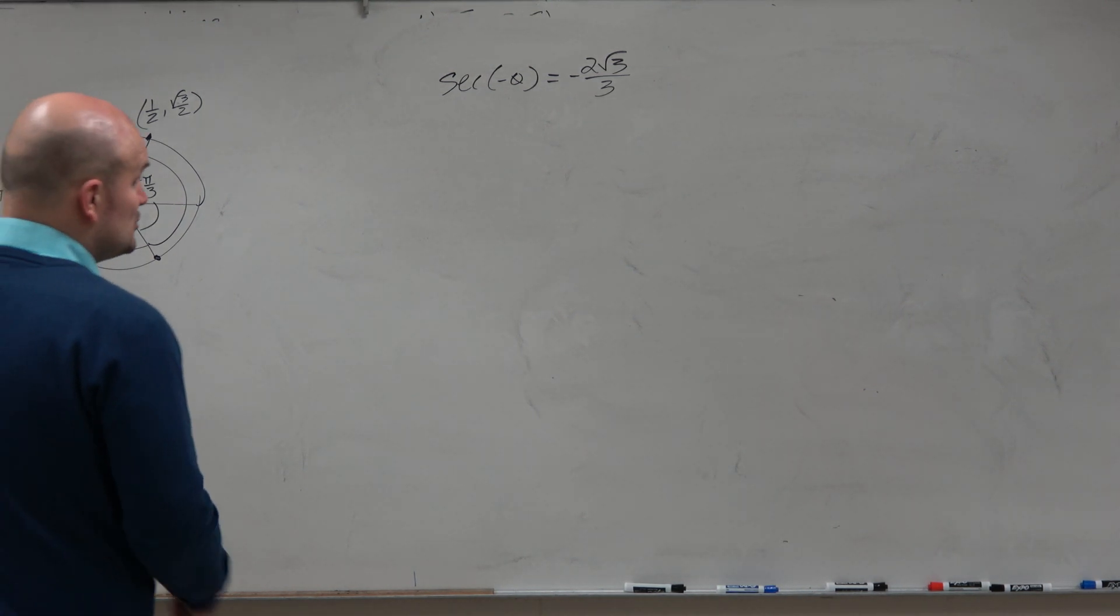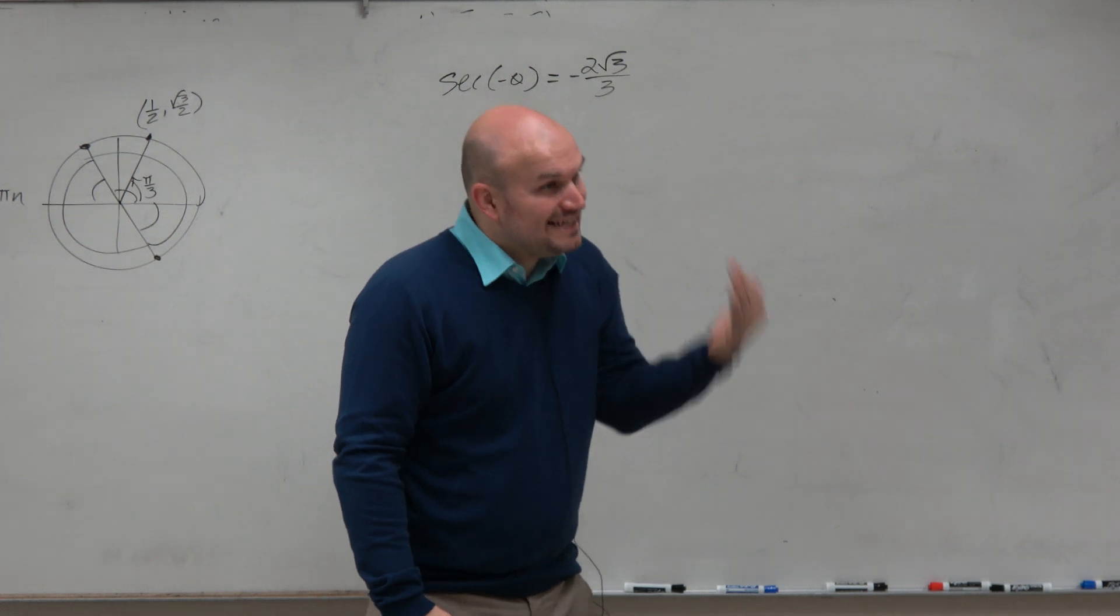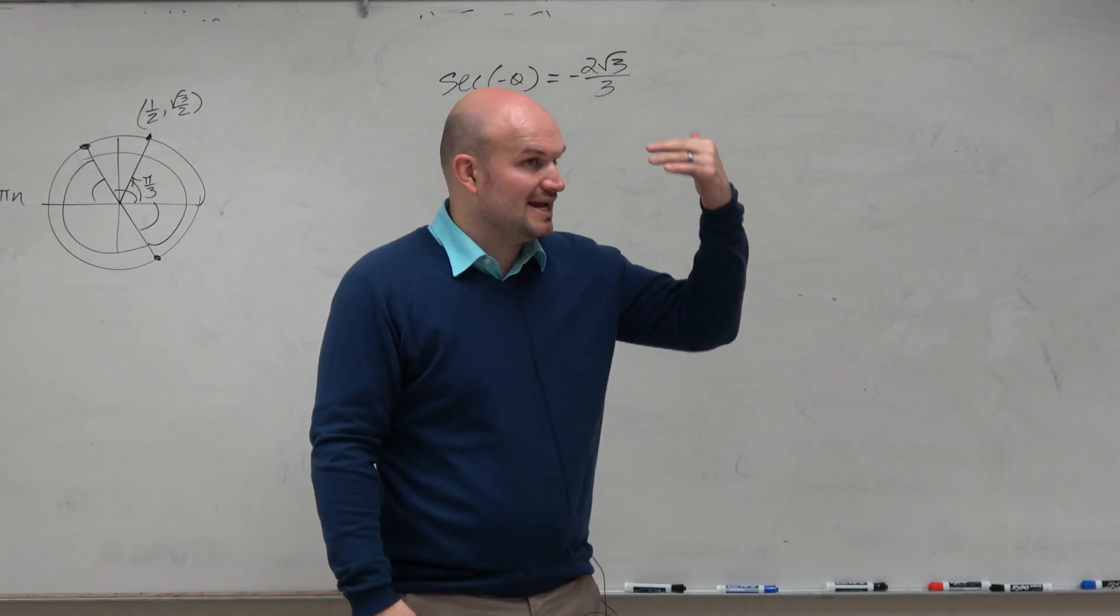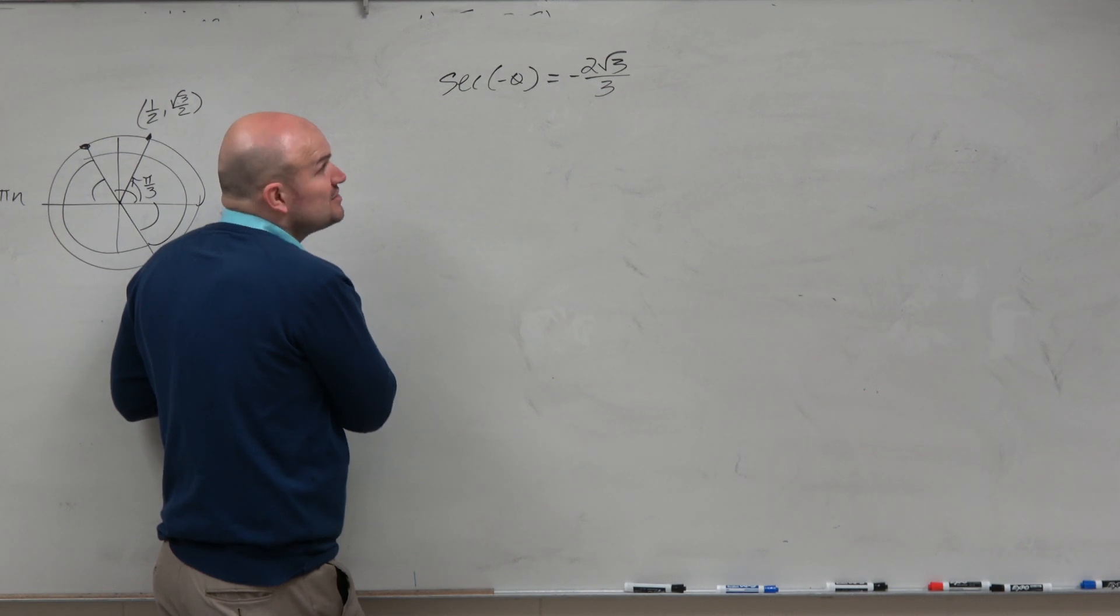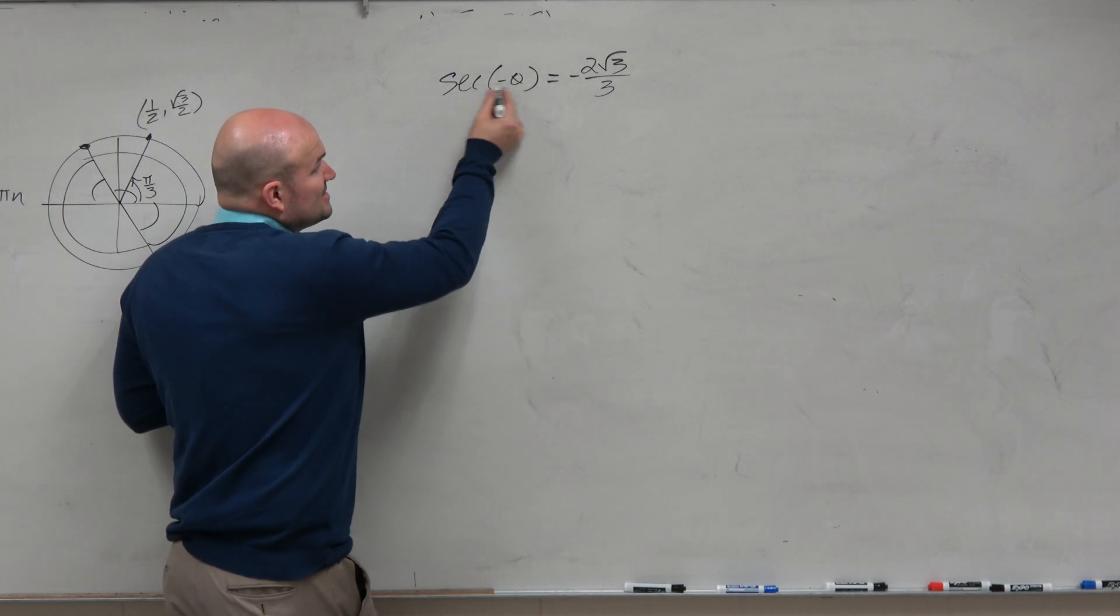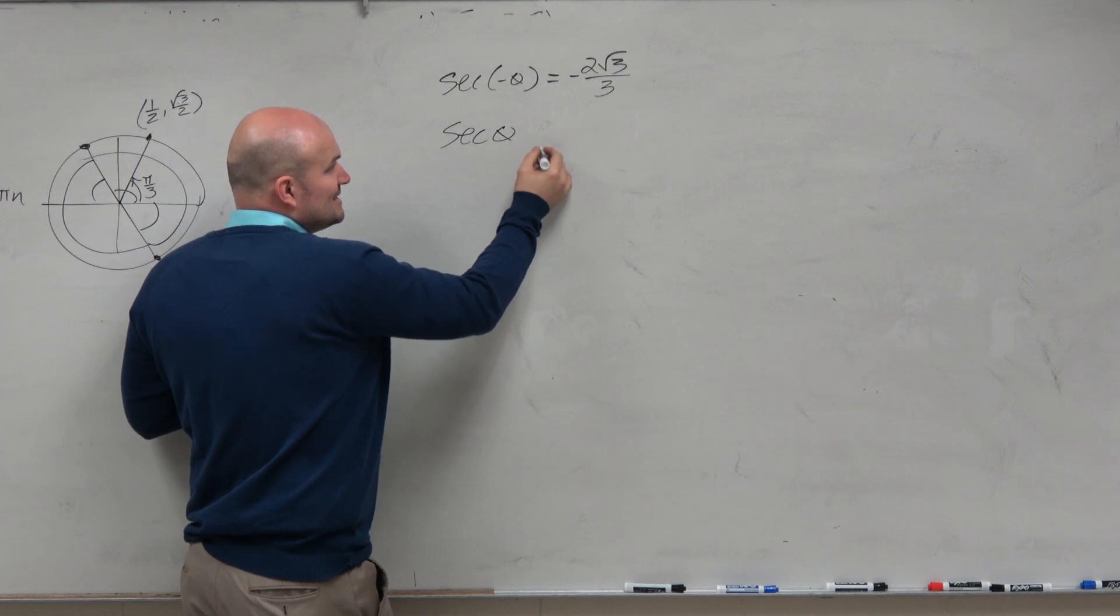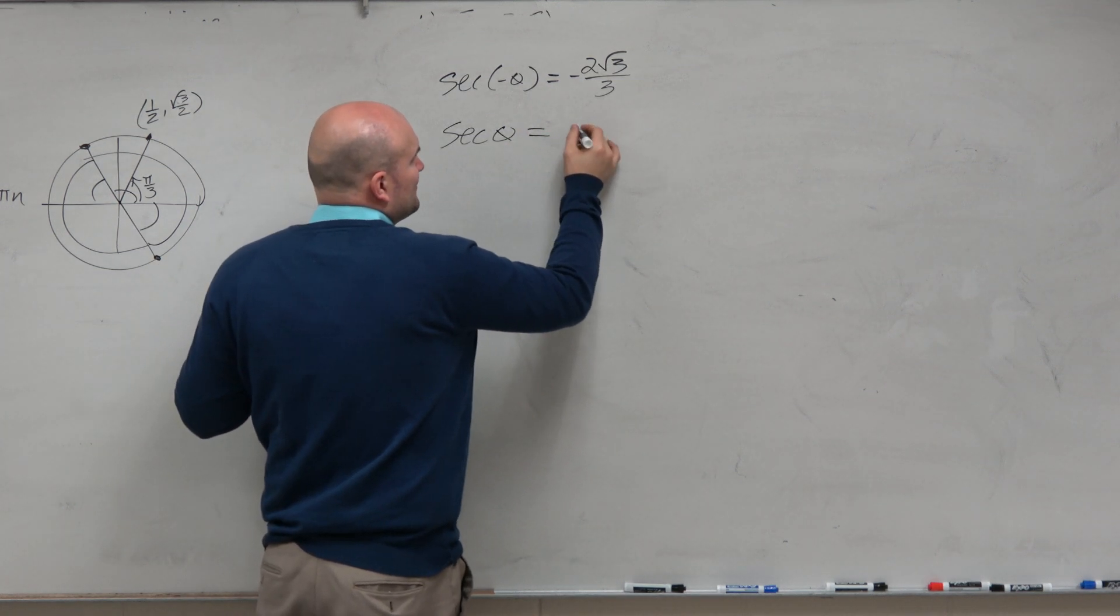You're always going to have a negative function for a negative angle, except for the even functions, which is cosine and secant. The fact that I'm giving you this problem with this identity is really just there to confuse you. Because secant of a negative angle, using the even-odd identities, is just equal to secant of theta.